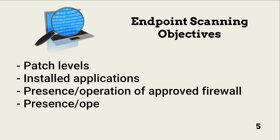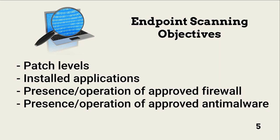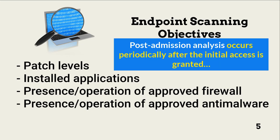Endpoint scanning is done in two ways. In the first approach, a NAC software agent is installed on each endpoint. This agent continuously collects information that relates to policy enforcement, including patch levels, installed applications, approved firewall presence and operation, and approved anti-malware presence and operation. Agents make it easy to check device status periodically, especially when attempting to gain access to classified data and highly categorized resources. This policy compliance review for already connected endpoints is known as post-admission analysis.